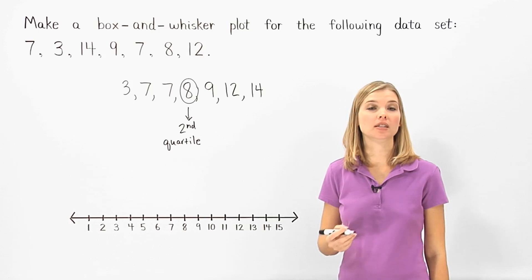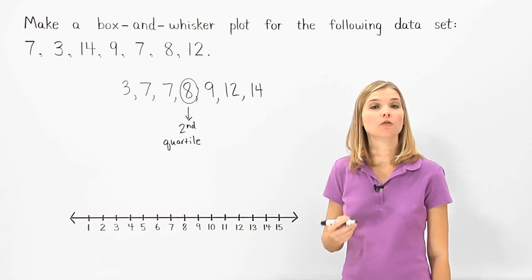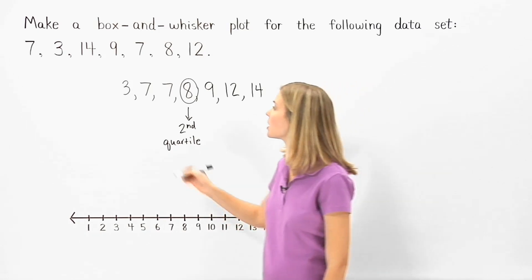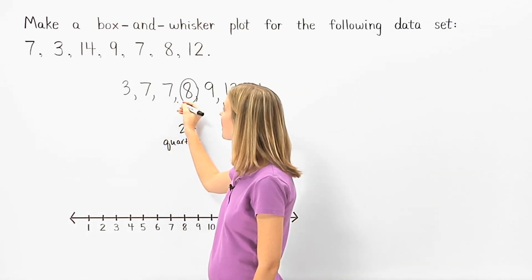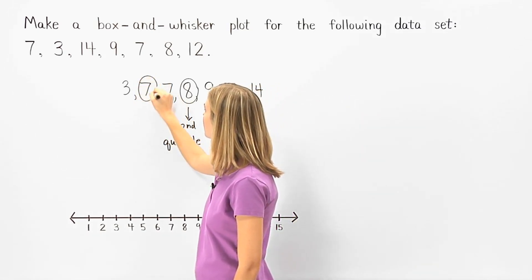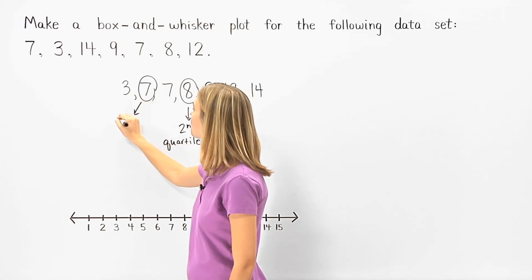Next, we find the first and third quartiles. The first quartile is the median or middle number of the lower half of our data set, which in this case is 7. So 7 is the first quartile.